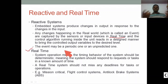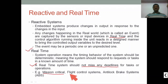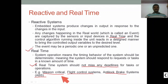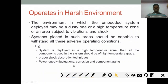A real-time system must not miss any deadlines for its tasks or operations. Examples include mission-critical systems like flight control systems and anti-lock braking systems (ABS), where an exact, within-time response is required — otherwise there is loss or damage to the system or human life. We'll discuss how to work with real-time systems in subsequent sessions.